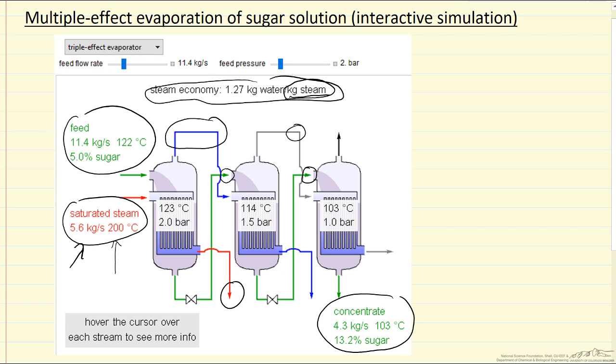The simulation allows us to vary feed pressure and flow rate. I'm showing the triple effect here, but we can also look at double and single effect evaporators to see efficiency differences. This is a forward feed system - the steam, evaporated water, and concentrate all flow in the same direction. It's also possible to do a reverse effect.